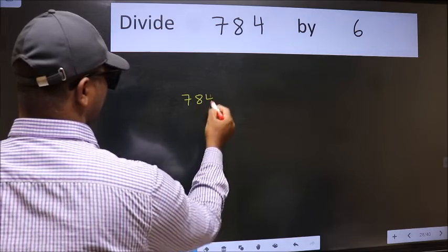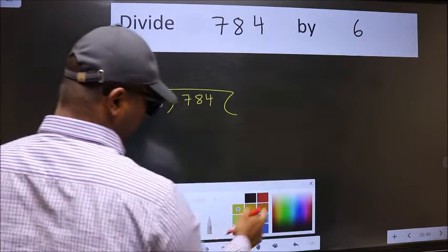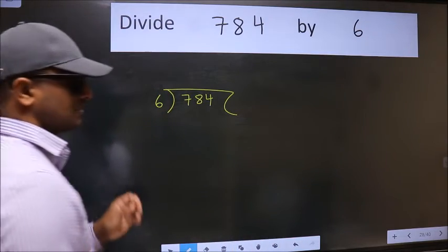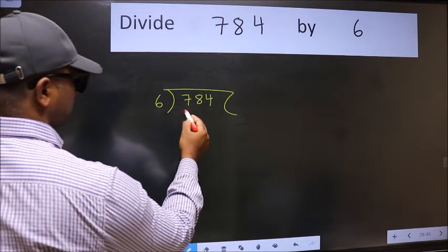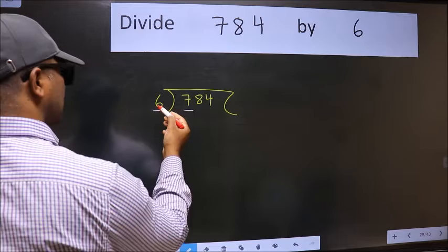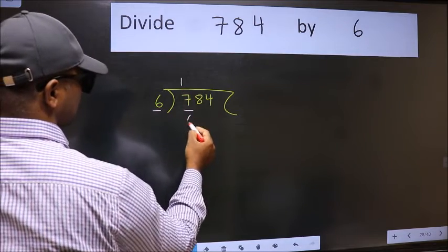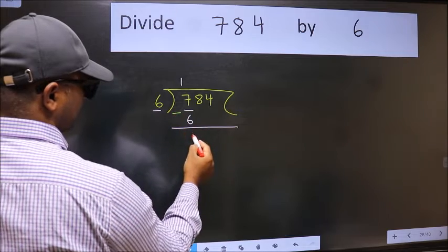7.84. 6 here. This is your step 1. Next, here we have 7 and here 6. A number close to 7 in 6 table is 6 times 1 is 6. Now we should subtract. We get 1.